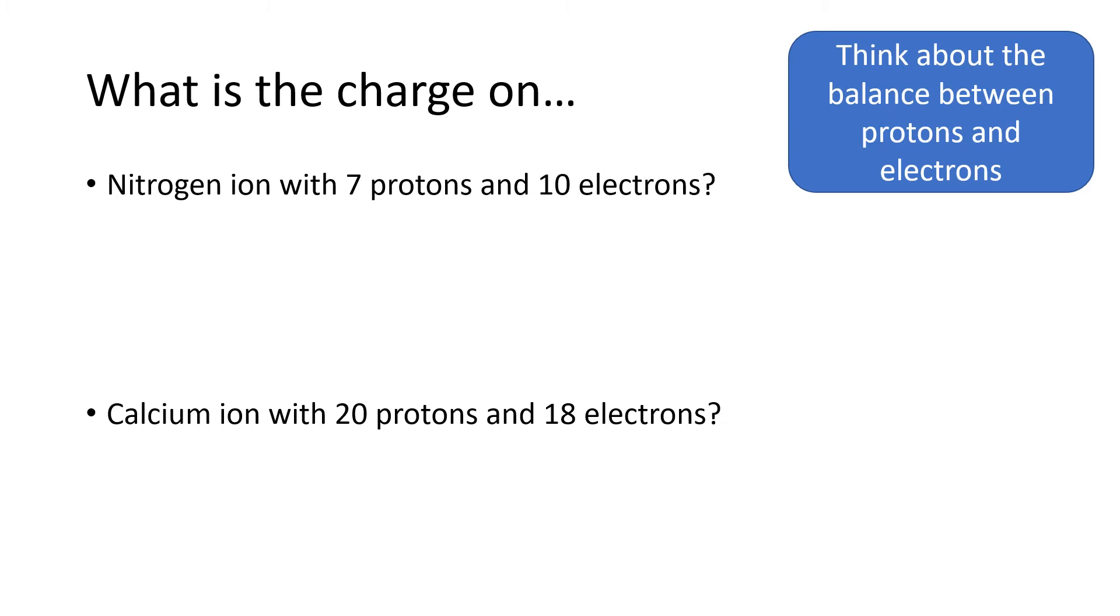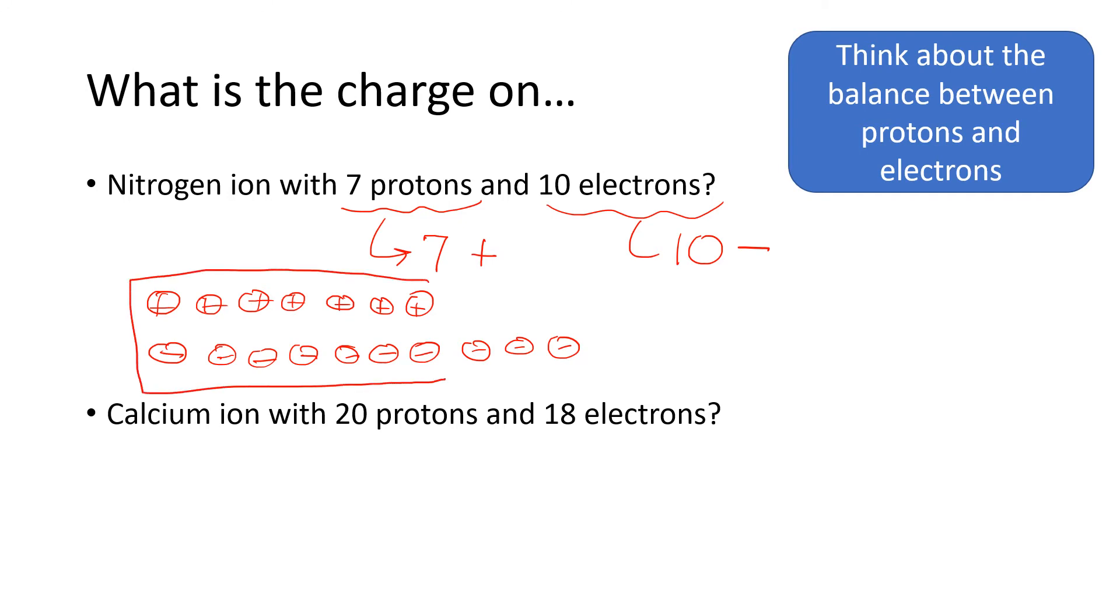So this basically means the seven protons mean that we have seven positive charges, and ten electrons mean that we have ten negative charges. So sometimes I'll draw this out this way. We have seven positive charges coming from those seven protons, and then we have ten negative charges. So notice that for seven of these negative charges, they're going to cancel out with the seven positive charges from the protons, but then we have three extra negative charges. So the overall charge on the nitrogen ion is going to be three negatives. So we have three more electrons than protons.